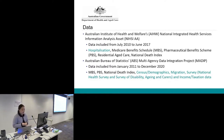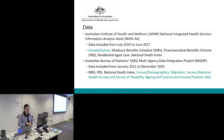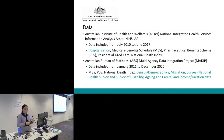In terms of the data, we have two large linked datasets. One is AIHW's National Integrated Health Services Information Analysis Asset — NISAA — and the data ranges between July 2010 to June 2017. It includes hospitalisation, Medicare Benefit Schedule, Pharmaceutical Benefit Scheme, Residential Aged Care, and the National Death Index data.